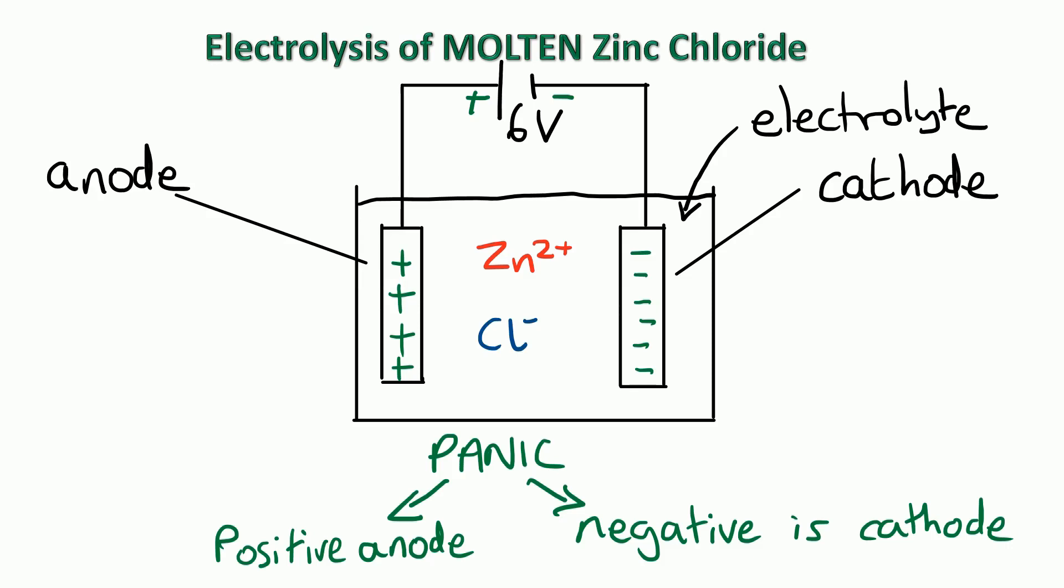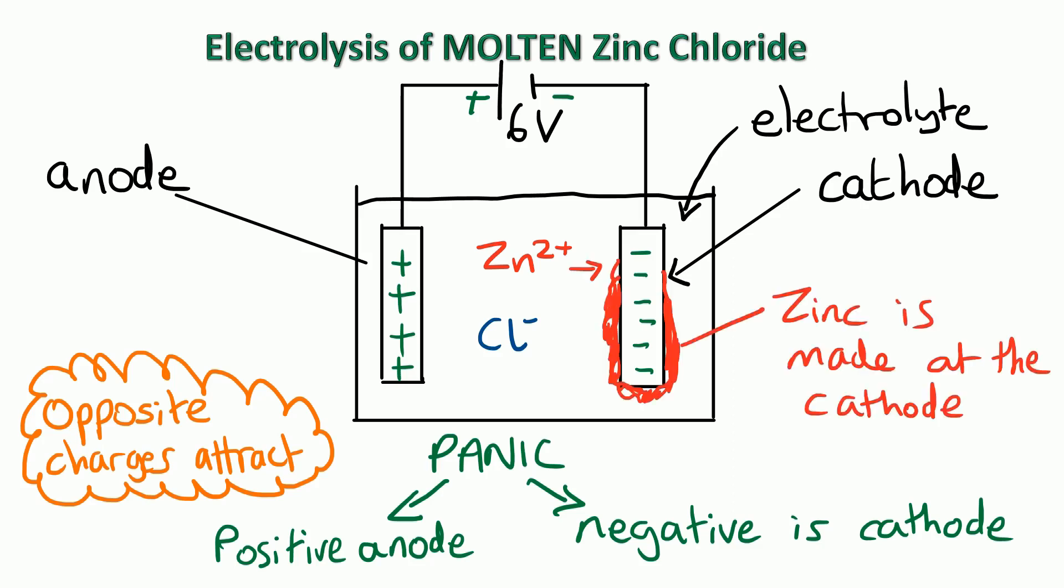Now during electrolysis we need to remember opposite charges attract so that means the zinc ions will move towards the negative cathode. So zinc is made at the cathode as we saw in the practical. The chloride ions because they're negative they will be attracted towards the positive anode. So chlorine is made at the anode which is what we saw and it bleached the blue litmus paper that proved it was chlorine gas. So this is a classic case of electrolysis.